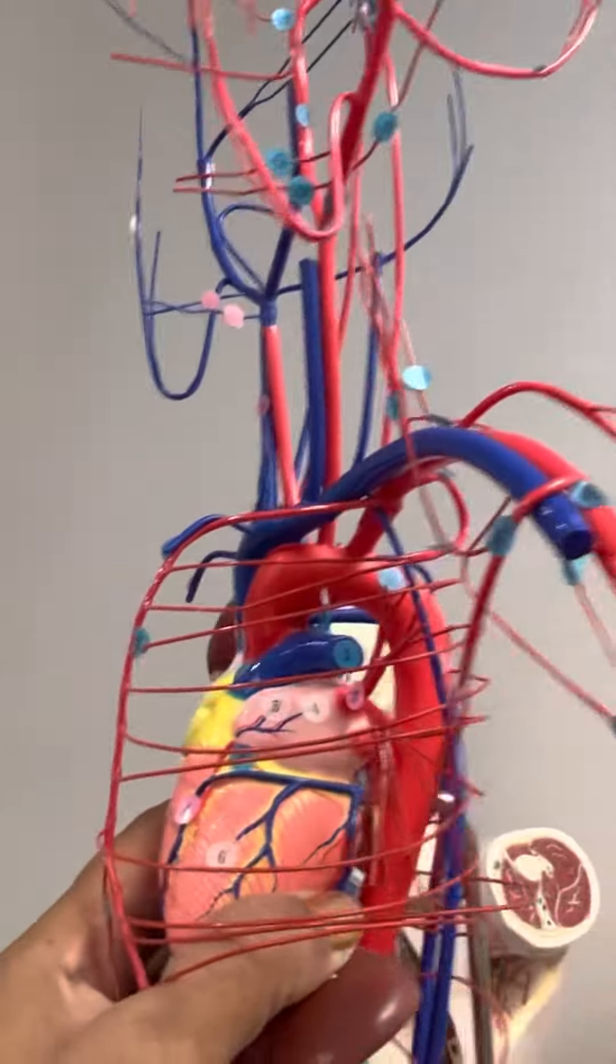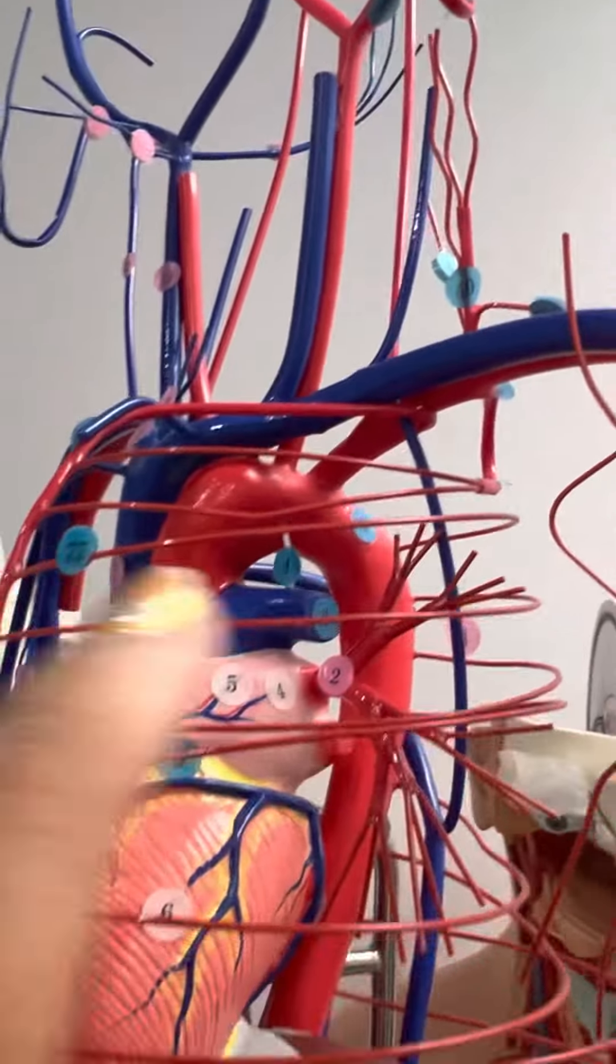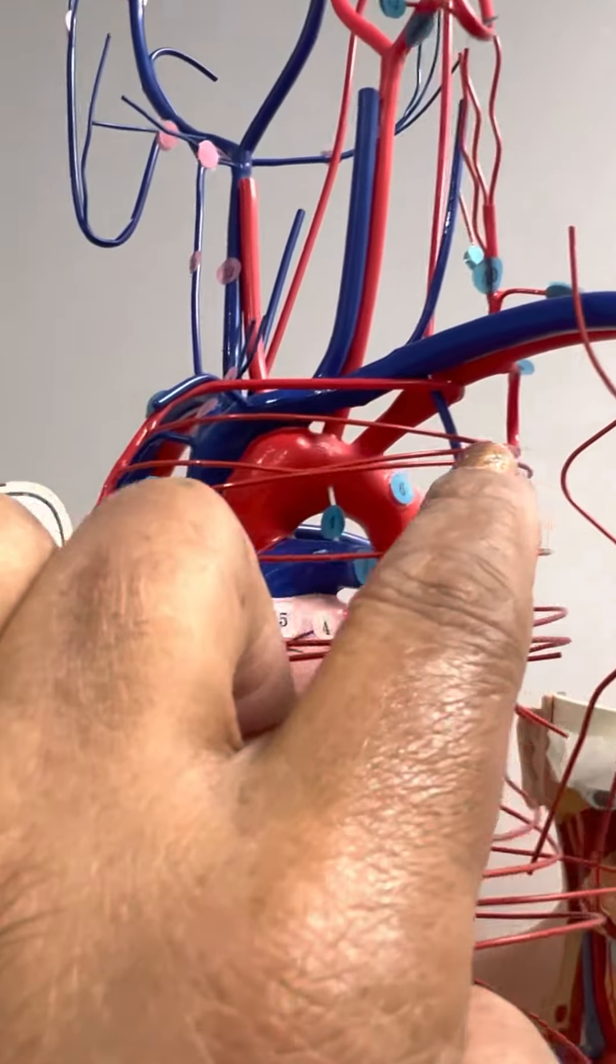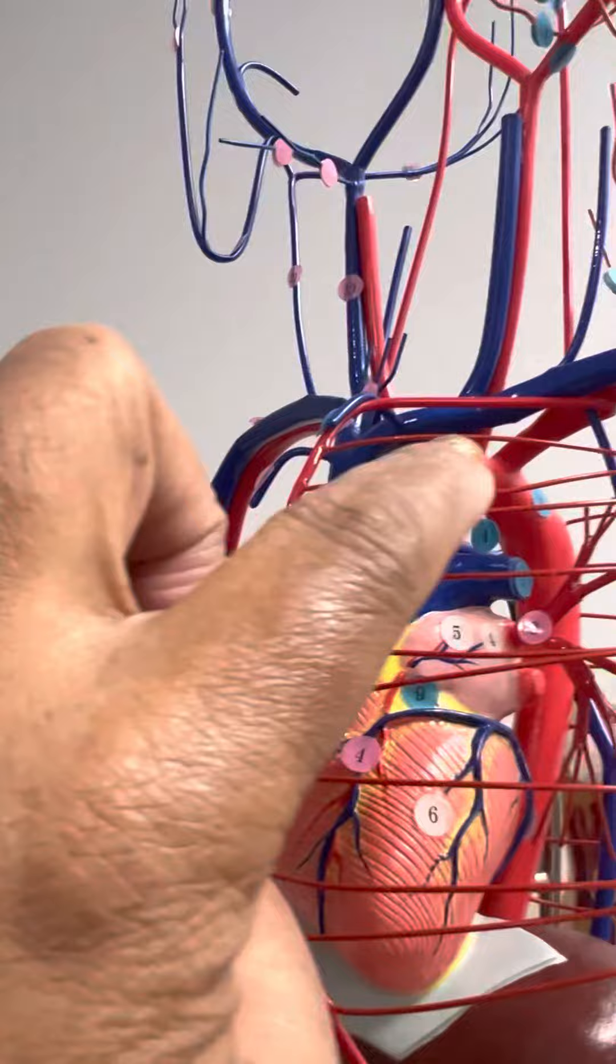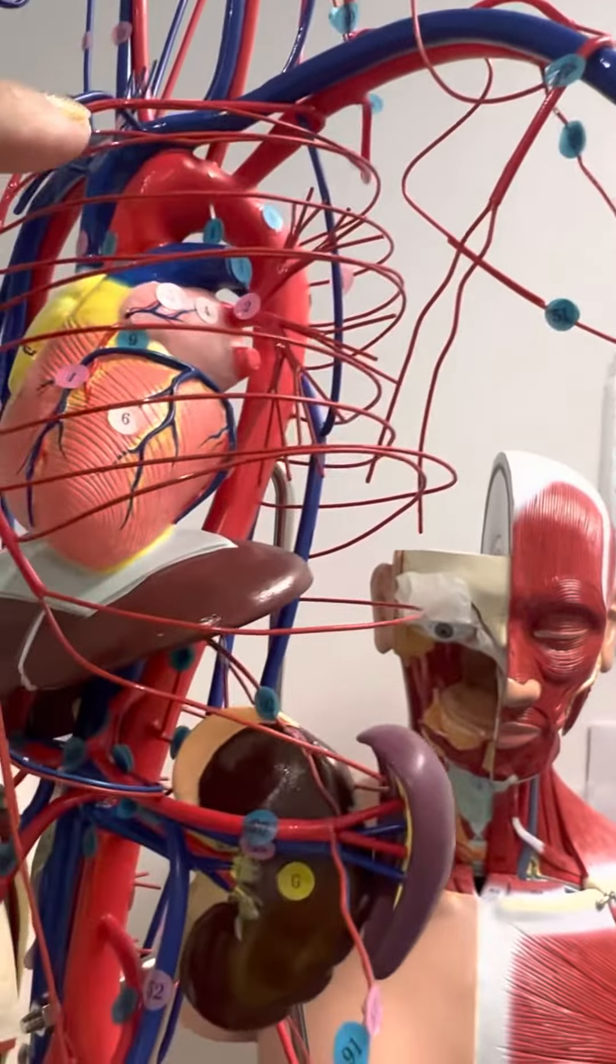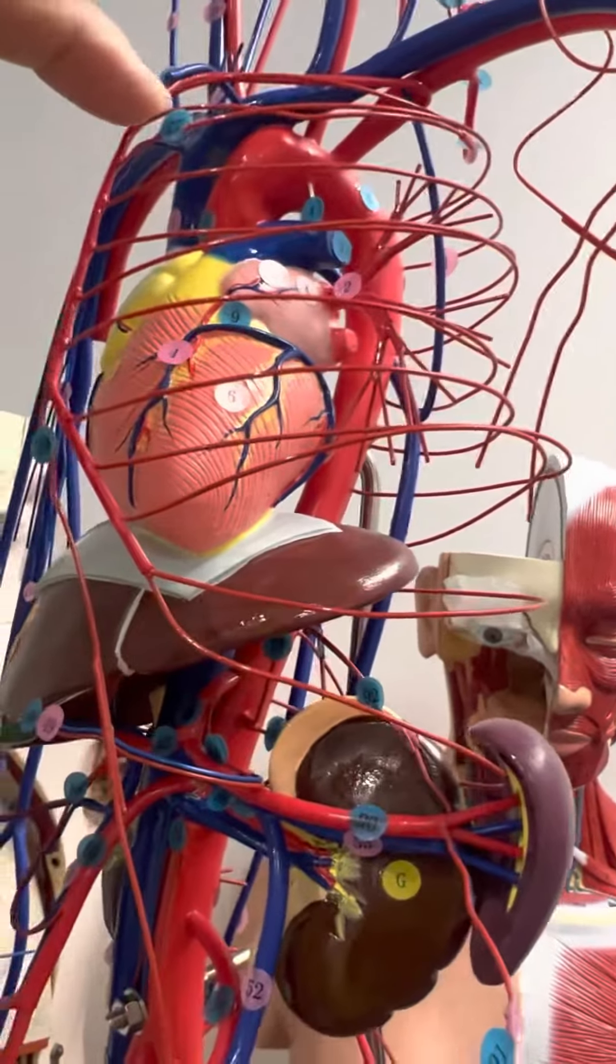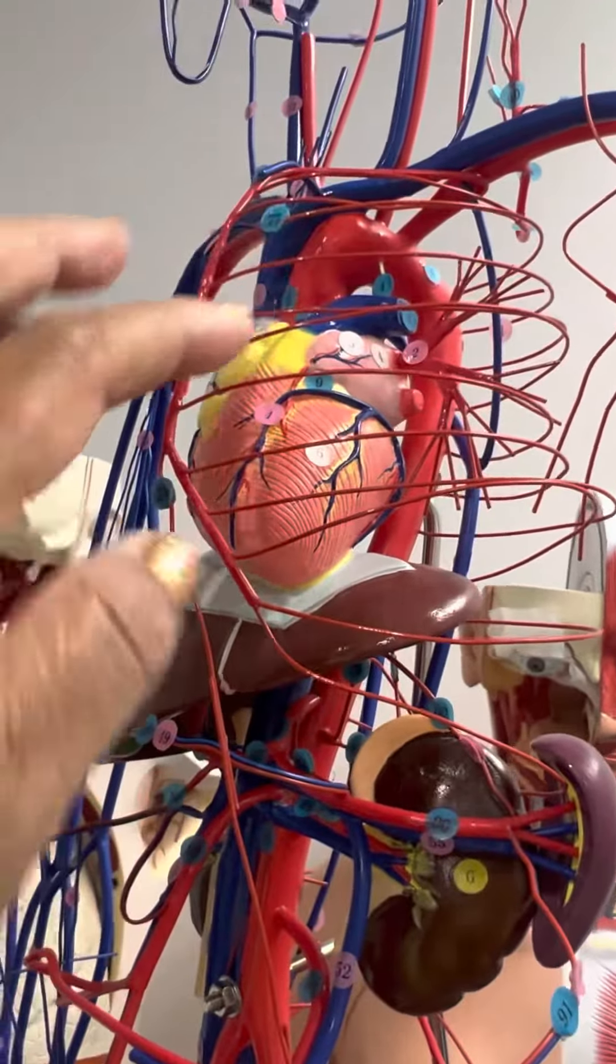And if you follow him around, you see this costocervical that came off the back is coming around and it's going to supply all of these costocartilages between the ribs.